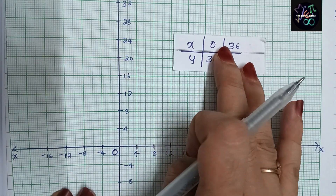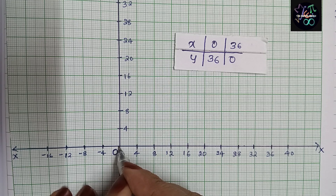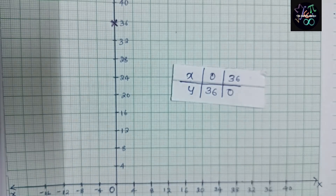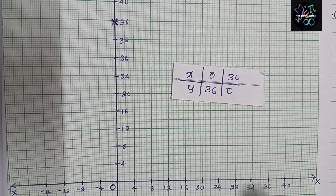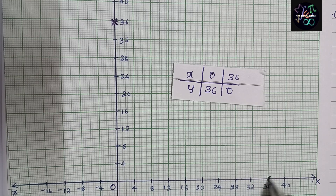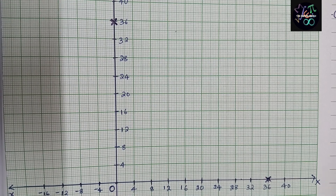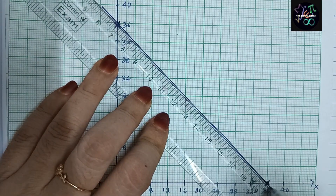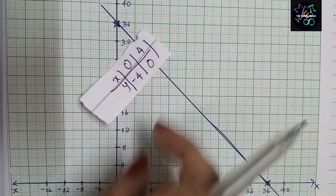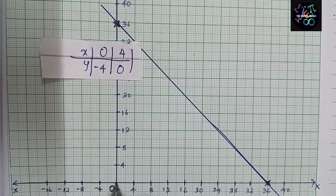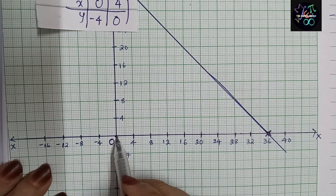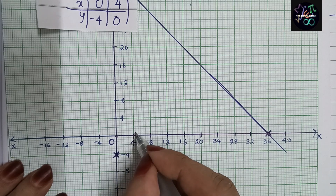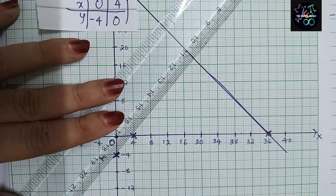For the first equation, x = 0, y = 36 — I mark that point. Then x = 36, y = 0 — I mark that point on the x-axis. I join these two points to get the first line. For the second equation, x = 0, y = -4 — I mark that. Then x = 4, y = 0 — I mark that. I join these points to draw the second line.